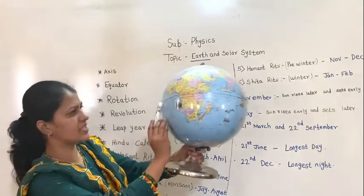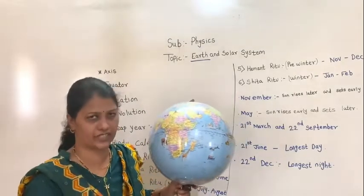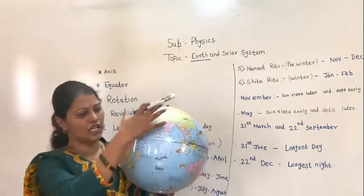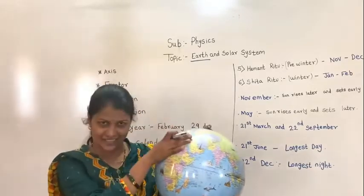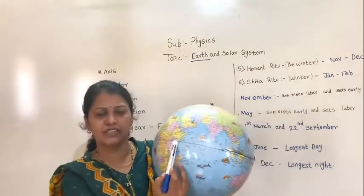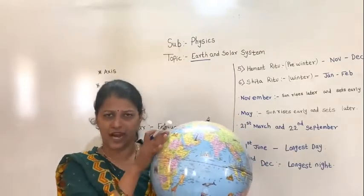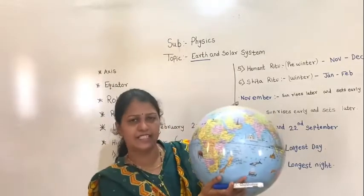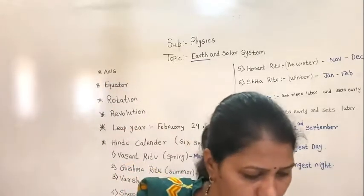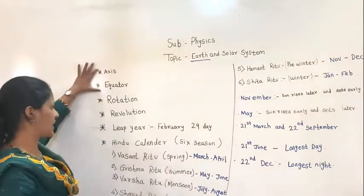Can you see this middle line on the globe? That is the equator. The equator is a line which divides the Earth into two equal halves — the northern hemisphere and the southern hemisphere.